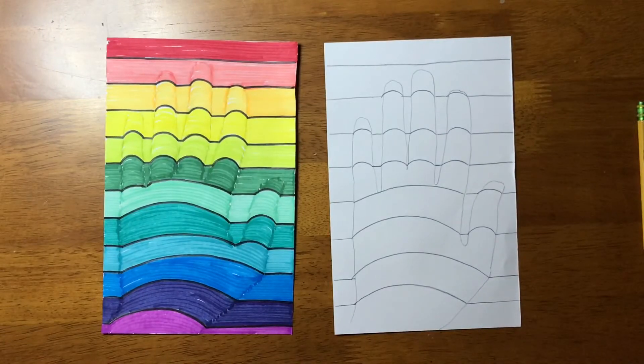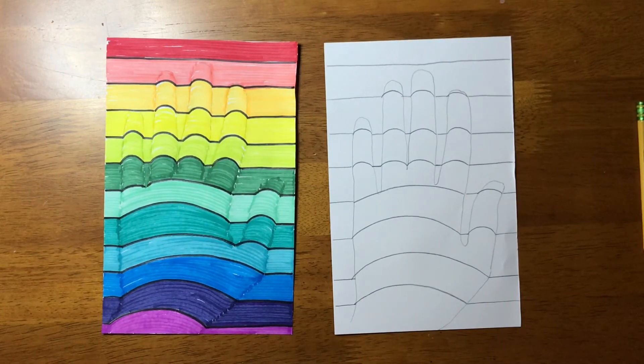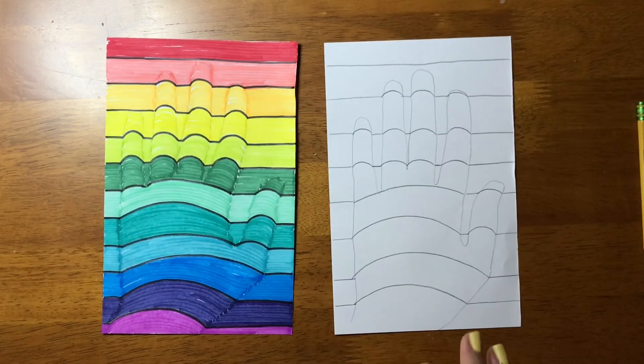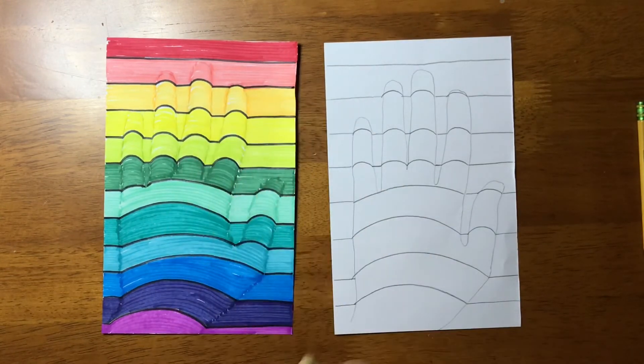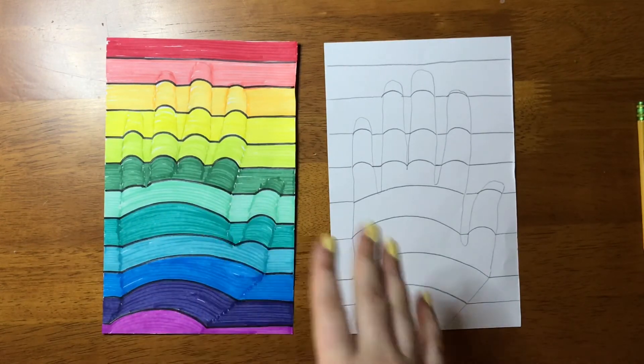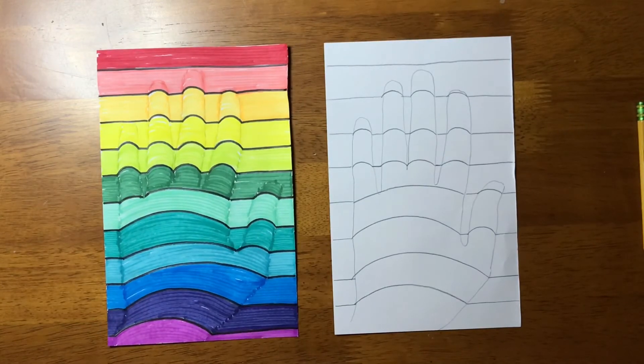Now we have the outline of our hand, we have the stripes, the straight horizontal stripes in the background, and we have these little bump lines that go over our hand. The next step is we get to color the background. All these dark sharpie lines, we're not going to do that until the very, very end. That's the very last step.